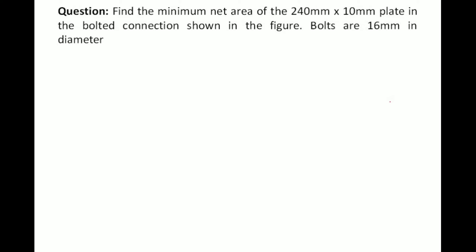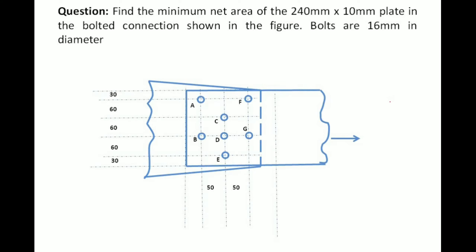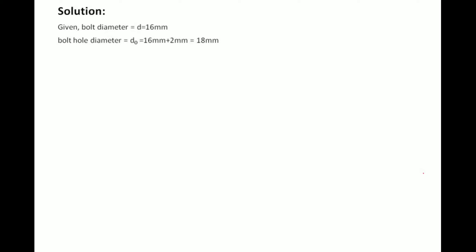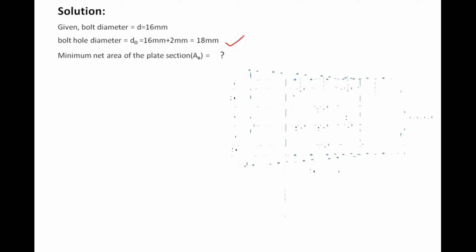Now let us solve the second question: find the minimum net area of a 240×10 mm plate in the bolted connection shown in the figure. The bolts are 16 mm in diameter. In this figure, the bolts are not in a simple straight-line connection but are in a staggered configuration. The diameter of hole = 18 mm (adding 2 mm clearance). Now, what will be the minimum net area?